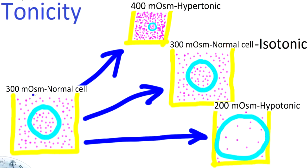Let's start with this normal animal cell here. It contains, on average, a concentration of 300 milliosmoles. We're going to take the cell and place it into a concentration of 400 milliosmoles, which is considered a hypertonic solution. Water is going to be moving out of the cell, and the cell is going to shrink as a result.